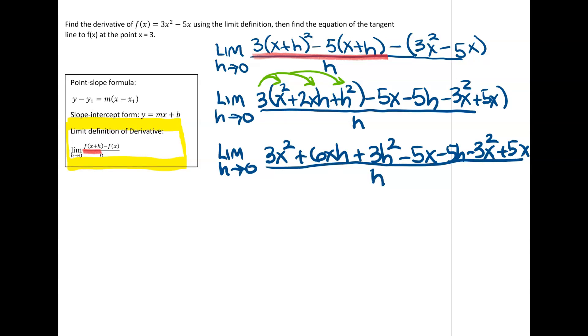Now we get some stuff that's going to cancel here. We have a 3x squared with a negative 3x squared. We have a negative 5x and a positive 5x. And then all these terms that are left, we're going to gather those up. And because all those terms have an h in common, I'm going to factor an h out.